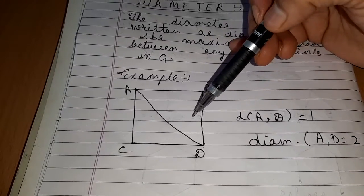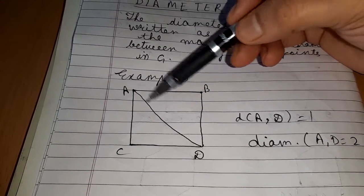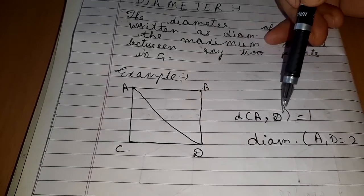So minimum distance to go from A to D is one. This is called distance.